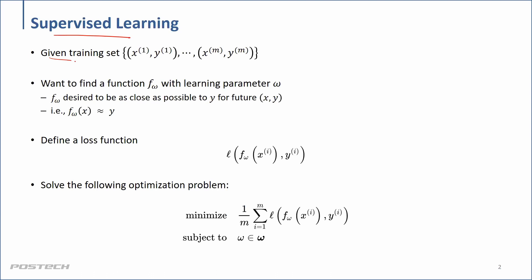Given a training dataset, we have input and output at the same time — it's a paired dataset. We have inputs and corresponding outputs, or we can say inputs and corresponding labels. These are the types of data information we need for supervised learning.